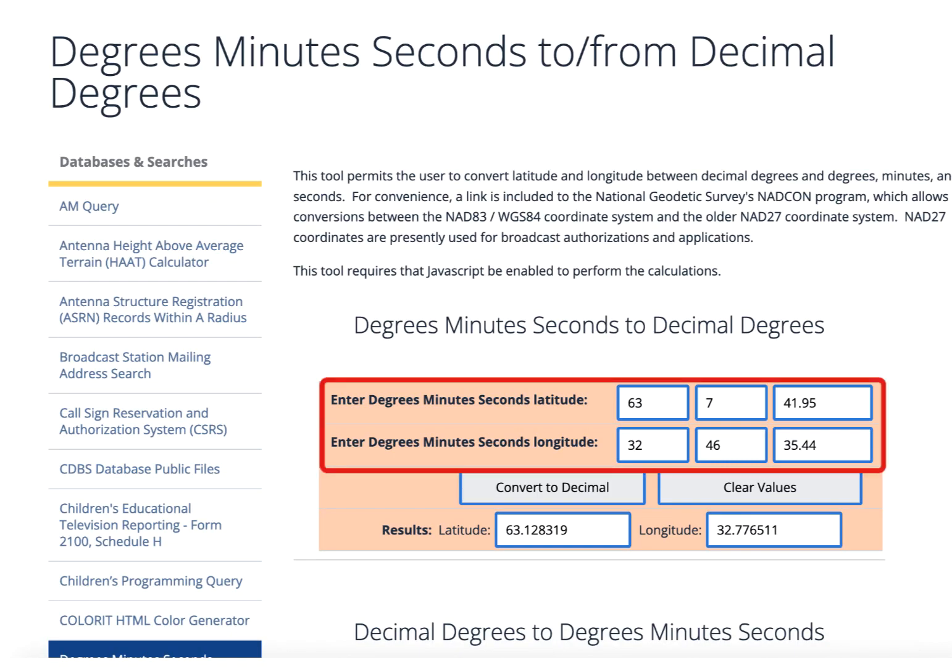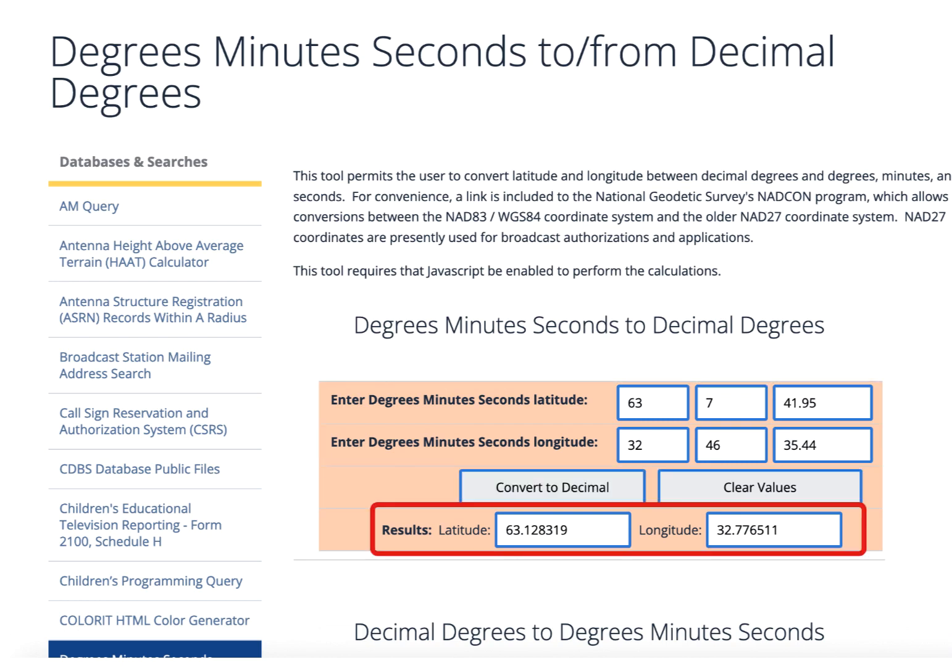Enter the numbers from Google Earth into the fields. Then click Convert to Decimal and the new values will appear.